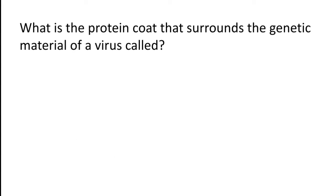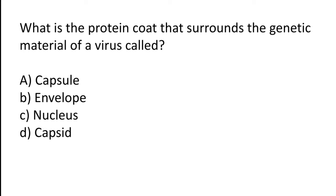What is the protein coat that surrounds the genetic material of a virus called? Options: Capsule, Envelope, Nucleus, Capsid. The correct answer is option D — the protein coat that surrounds the genetic material of a virus is called the Capsid.